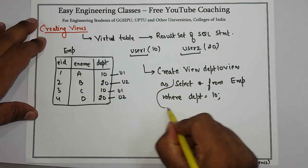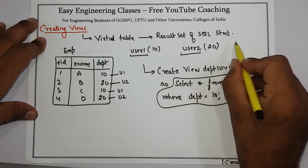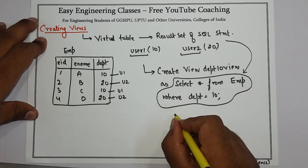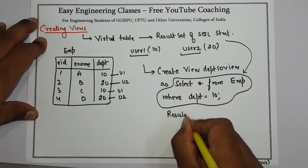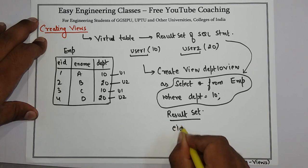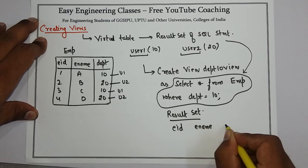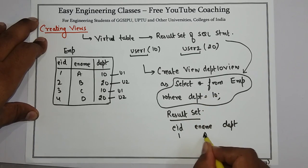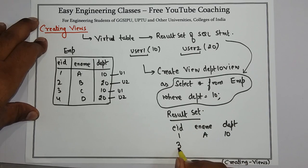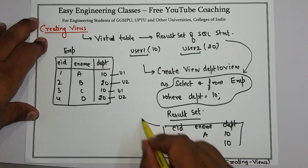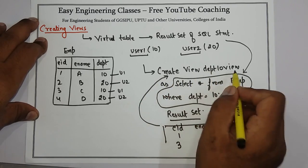This SQL statement will return a result set having the data like this: employee ID, employee name, and department. The data will be only rows 1, A, 10 and then 3, C, 10. So this will be the result set, and this result set will be present in the view department10_view.